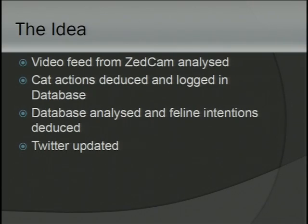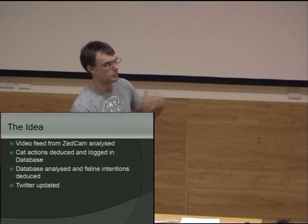We've done this by analysing the image feed from the webcam, generating some sightings of the cat when we see it, pushing those up to a database on our server, where they're being analysed periodically. When the database analysis sees a string of sightings that seem to make some kind of sense — like the cat moving towards the food bowl — it will generate a tweet that makes some kind of sense.